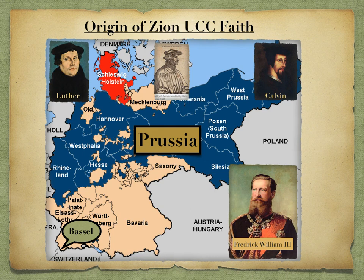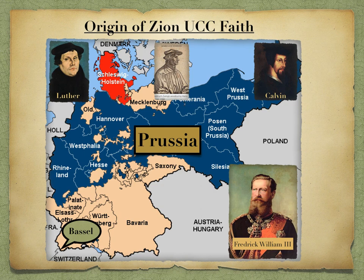The origins of Zion's faith started in Prussia, Germany. The Reformation began on October 31st, 1517, when Martin Luther nailed 95 theses to the door of the castle church in Wittenberg, Germany. Luther was excommunicated by Pope Leo X on January 3rd, 1521, in a decree called Deceit Romana Pontificia. In 1555, the Peace of Augsburg instituted the principle that allowed a German ruler to decide whether Catholicism or Lutheranism would be practiced in his realm.